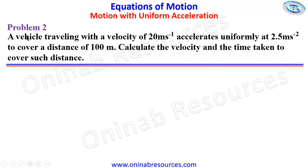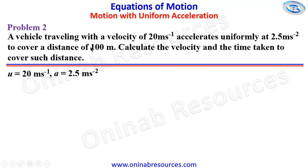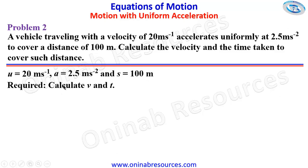In our solution: a vehicle travelling with a velocity of 20 meters per second — that's the initial velocity U, equal to 20 meters per second — accelerates uniformly at 2.5 meters per second squared. Acceleration is 2.5 meters per second squared. To cover a distance of 100 meters, S is 100 meters. So we are required to calculate V and T, that's velocity and time taken.